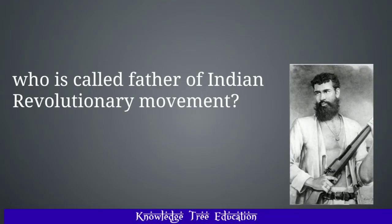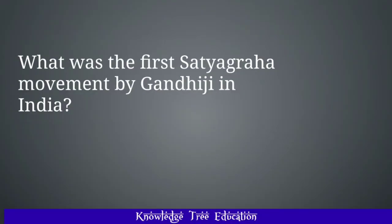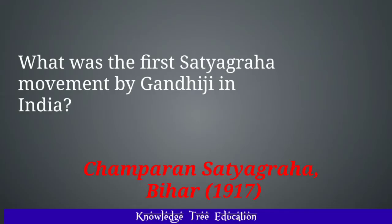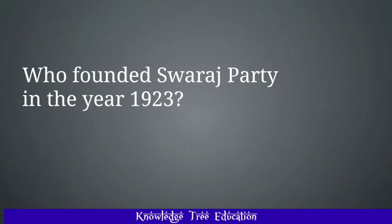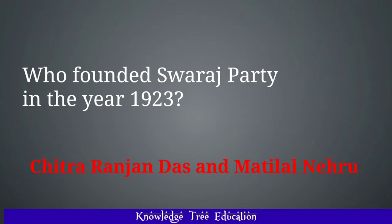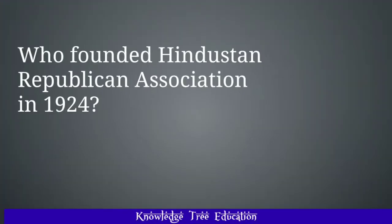Who is called the Father of the Indian Revolutionary Movement? And the answer is Vasudev Balwant Phadke. What was the first Satyagraha movement by Gandhiji in India? And the answer is Champaran Satyagraha in Bihar in 1917. Who founded the Swaraj Party in 1923? And the answer is Chittaranjan Das and Motilal Nehru.